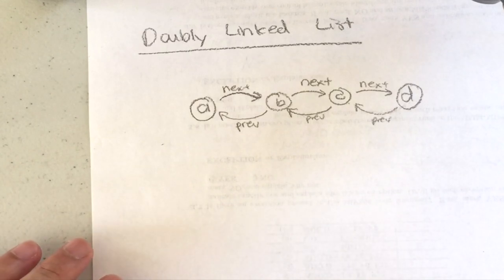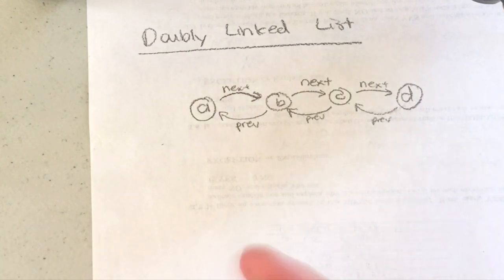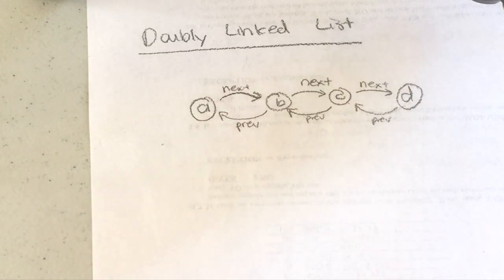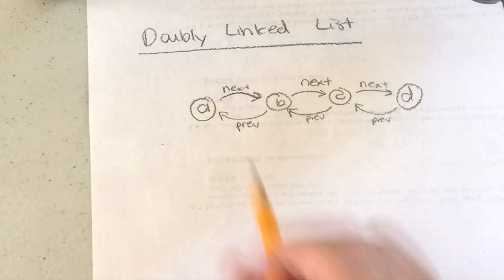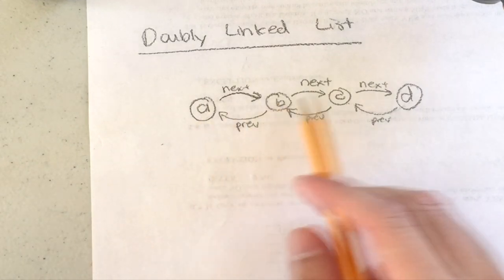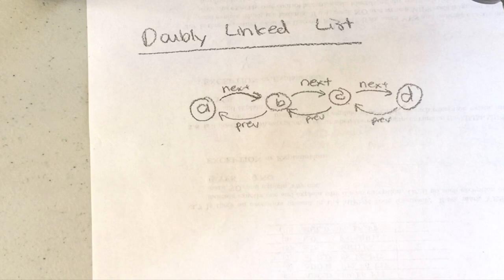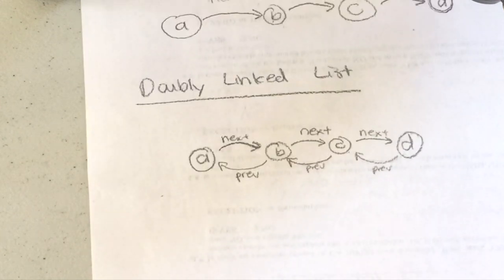Linked lists can be sorted or unsorted — it really depends on the order you're adding elements. So if I inserted A, then C, then B, the list would be A, C, B — not in sorted order.